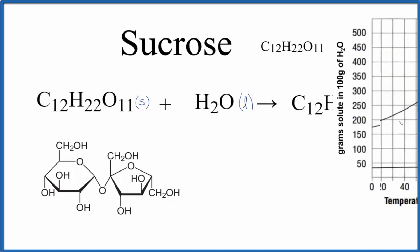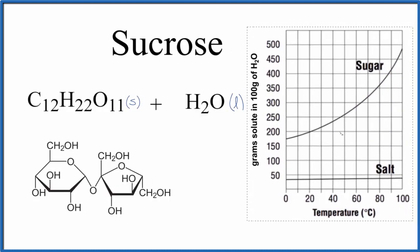So if we look at a graph of solubility for sucrose in water at different temperatures, we'll see that we have sucrose, this is our sugar, our table sugar. As the temperature increases, it becomes more soluble.